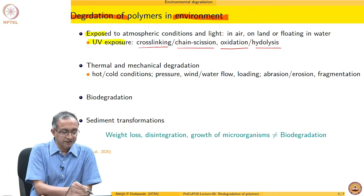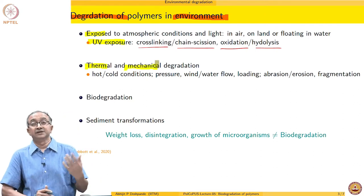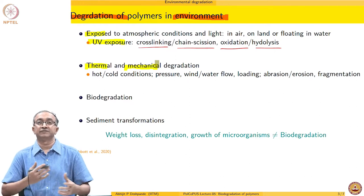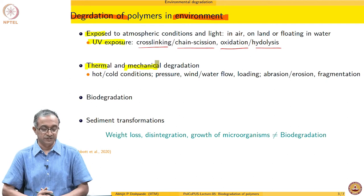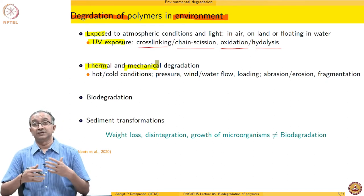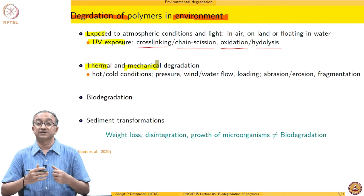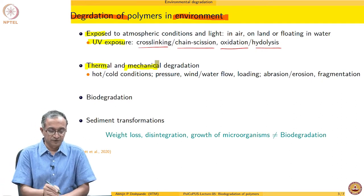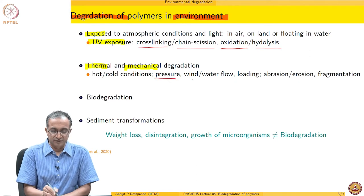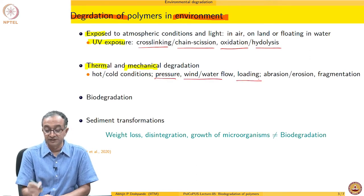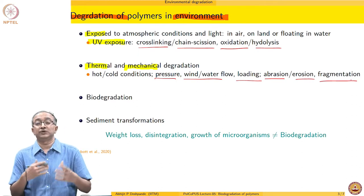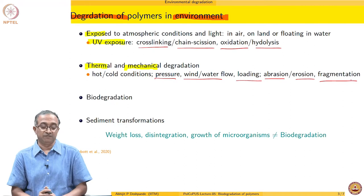The other aspect of degradation that happens is because of thermal and mechanical loading which the polymer sees. Depending on weather conditions, it can go from very cold to very hot. Also, during flow, stresses are applied, and sometimes the polymer gets loaded due to other materials present in the system. So therefore, there is in general pressure, flow conditions, mechanical loading, and abrasion and erosion processes and breakdown. All of these also lead to degradation of the materials.